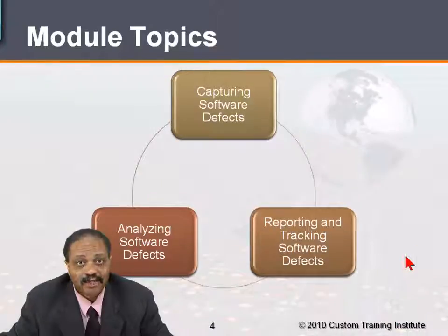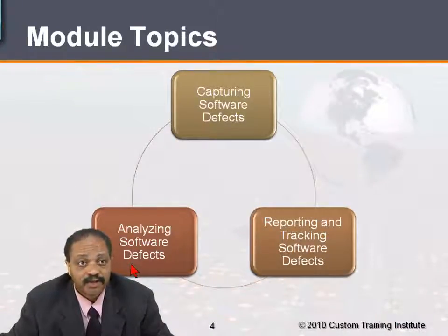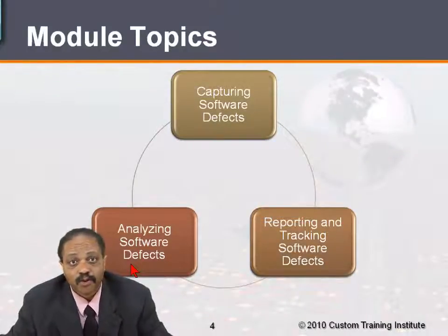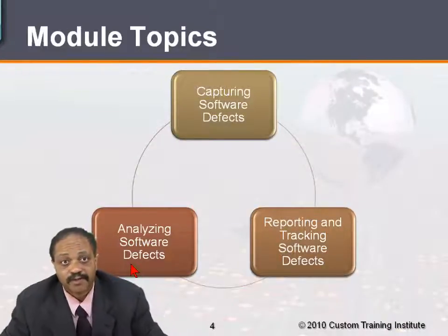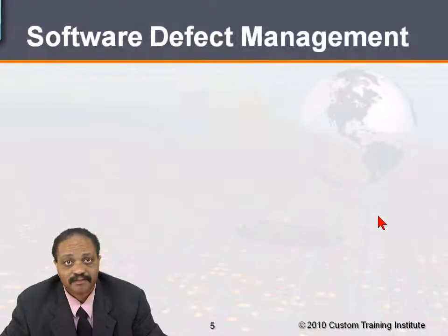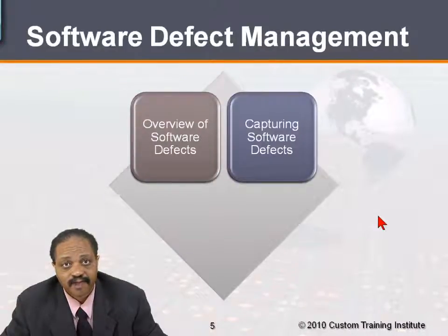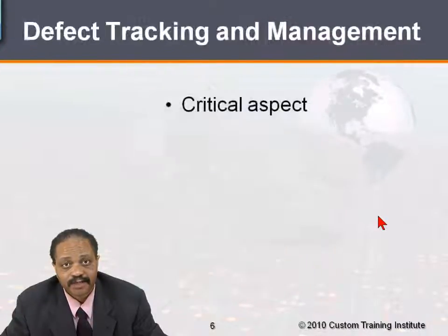We need to be able to analyze that information and then respond to it — whether we need to report back to the users that yes, the software really is doing what it's supposed to be doing, or no, it isn't doing what it's supposed to be doing, and here's how we're going to fix it. Let's take a look at the mechanisms involved: what are we talking about when we talk about software defects, how do we capture that information, how do we report and track it, and how do we analyze it?